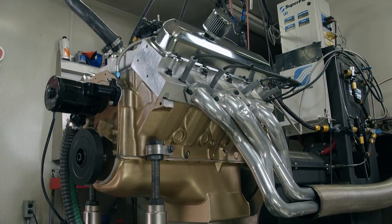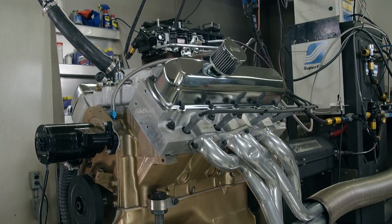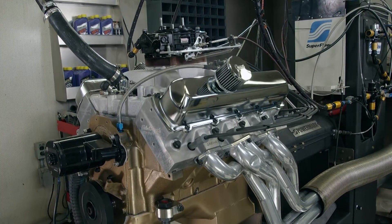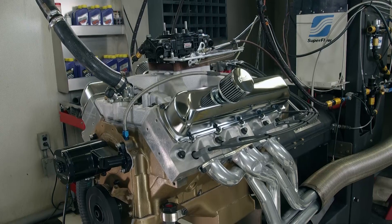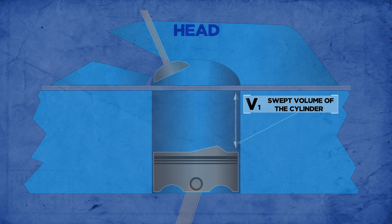There are five variables that affect compression ratio, and changing any one of these factors will raise or lower it. We're talking about volume. Number one: the swept volume of the cylinder. If you change the bore or stroke of a cylinder, you will change the volume of that cylinder, and therefore its compression ratio.